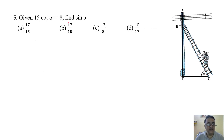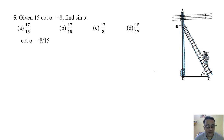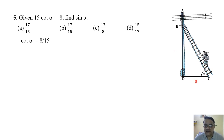Question 5: Given 15 cot α = 8, find sin α. So cot α = 8/15 — that is adjacent/opposite — meaning DC = 8 and BD = 15. The Pythagorean triplet for 8 and 15 is 17, so BC = 17.